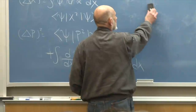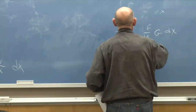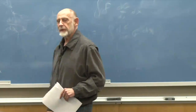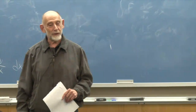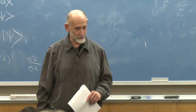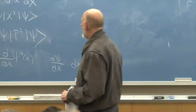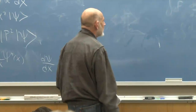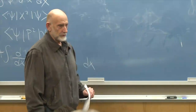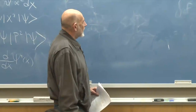Let's see if we can find an inequality between the uncertainty in x and the uncertainty in p. The inequality should be such that when delta x is small, delta p is big, and vice versa. Or better yet, that the product of delta x times delta p cannot be smaller than h-bar. I've set h-bar equal to one here — we'll put it back later.